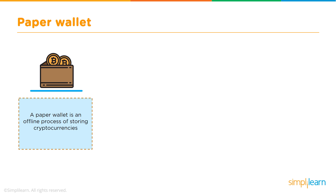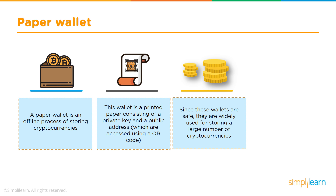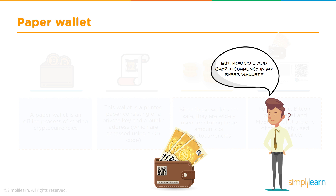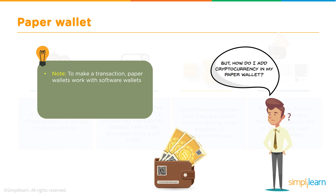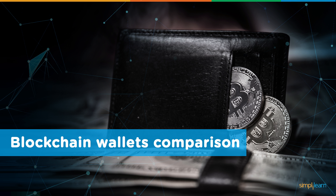A paper wallet is an offline process for storing cryptocurrencies. It is a printed paper consisting of both your private key and a public key, accessed using a QR code. Since these wallets are safe, they are widely used for storing large amounts of cryptocurrencies. Examples are Bitcoin Paper Wallet and MyEtherWallet. Paper wallets work with software or online wallets to transfer funds: first you park funds in a software wallet, then transfer to the public address printed on your paper wallet.